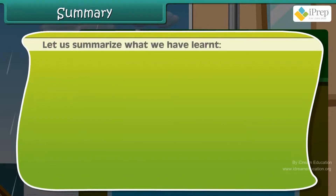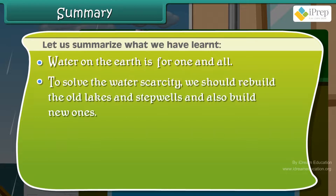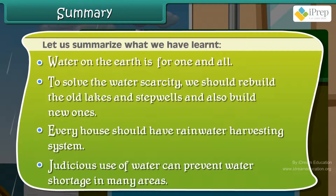Let us summarise what we have learnt. Water on the earth is for one and all. To solve the water scarcity, we should rebuild the old lakes and step wells and also build new ones. Every house should have a rainwater harvesting system. Judicious use of water can prevent water shortage in many areas.